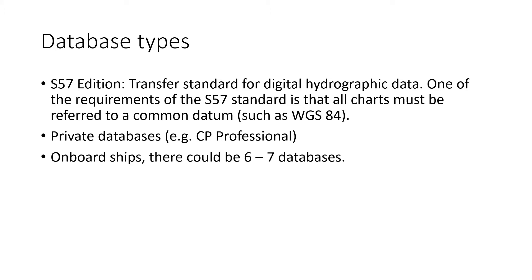That is why all charts, even reliable paper charts, comply with these datums and systems. On the other hand, you may have some professional or other private databases — in our system here it is called the CP Professional. On board your ship you may have about six to seven databases, but you should ideally choose the database that corresponds to the S57 standards, because those are the validated, official sources for electronic navigation charts. If data is not derived from these official sources, the system will normally display a warning, and navigation in those areas would have to be on paper charts — the electronic chart then becomes only a tool for situational awareness and you cannot use it for route monitoring.